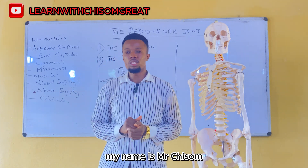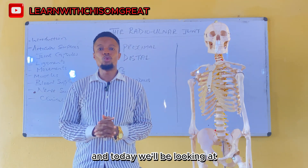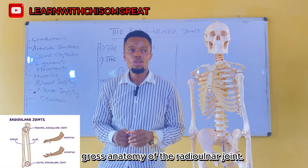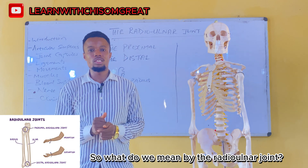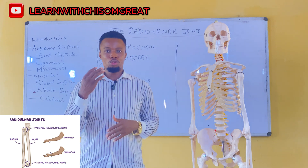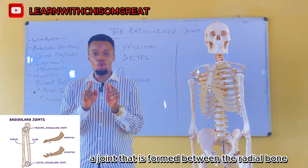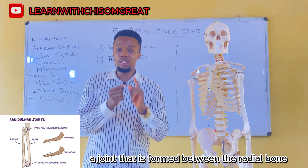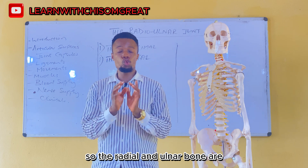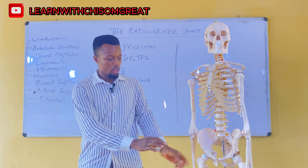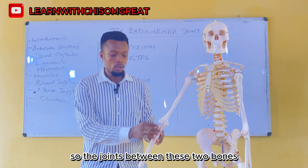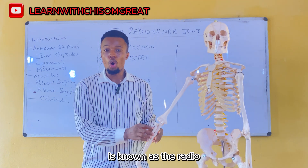Good day everyone, my name is Mr. Chisholm and today we will be looking at the gross anatomy of the radioulnar joint. From the word radioulnar, your mind should tell you that we are talking about a joint that is formed between the radial bone and the ulnar bone. The radial and ulnar bones are the two bones that are found in the forearm.